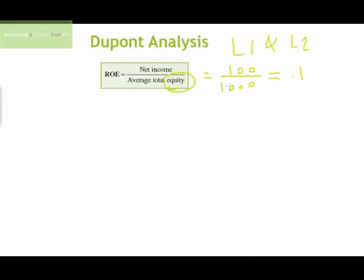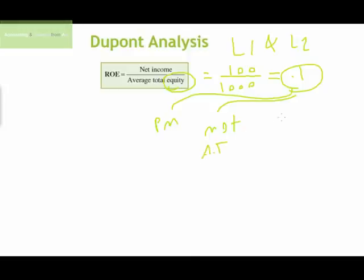But that 10% does not tell us the entire story. That's why we use the DuPont analysis approach — to reveal the secret behind the calculation of return on equity. The key question is: what is the driving factor for this 10%? Is it profit margin, asset turnover, return on assets, or degree of financial leverage?